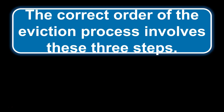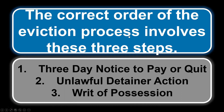The correct order of the eviction process involves three steps. First, you give them a three-day notice to pay rent or quit. If they do not pay rent nor quit the premises, the next step is filing an unlawful detainer action. Once that's filed and the eviction is approved, you'll get a writ of possession, which actually gets the tenant out of the property. Remember: writ of possession here, not writ of execution — that applies to attachments and judgments.